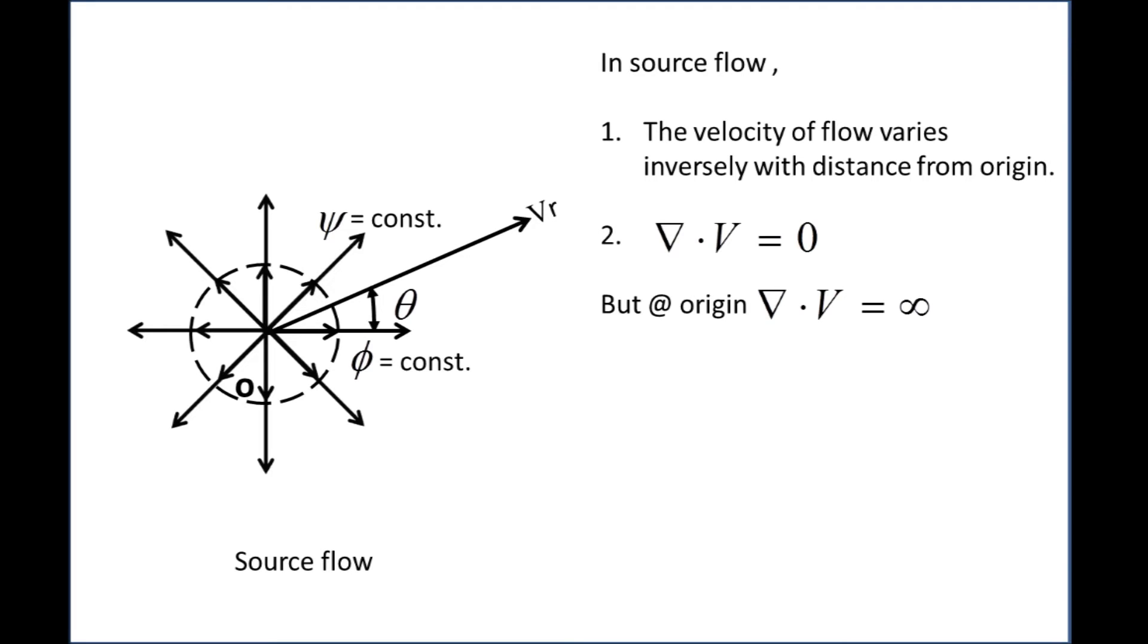Del dot V is zero, but at origin del dot V is infinite.